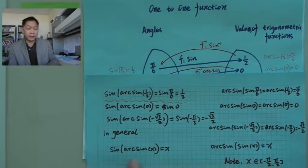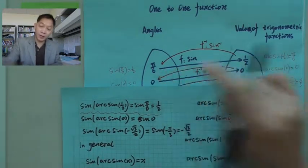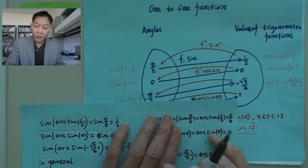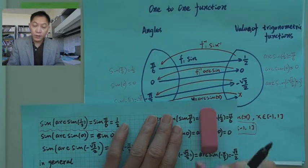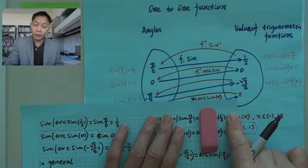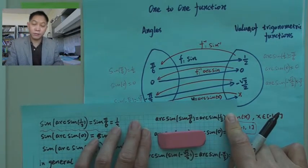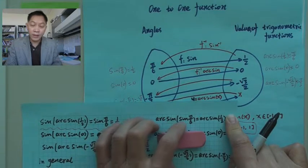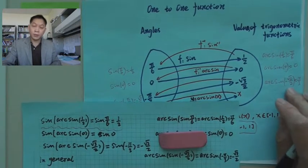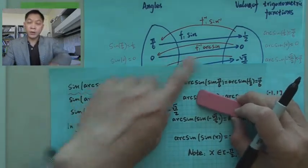That's identity one. Now for identity two: you can also start from π/6. Using sine, π/6 goes to 1/2. If you then want to go back from 1/2 to π/6, you use arc sine. So arc sine(sine(π/6)) = π/6.